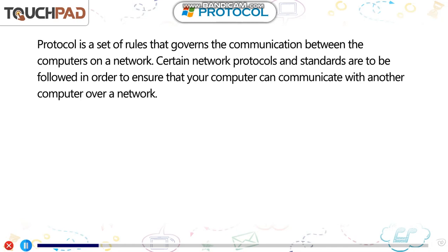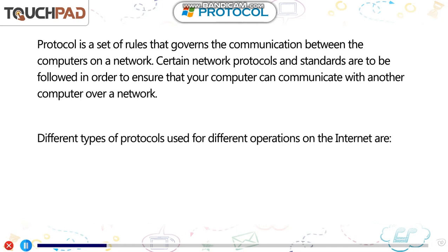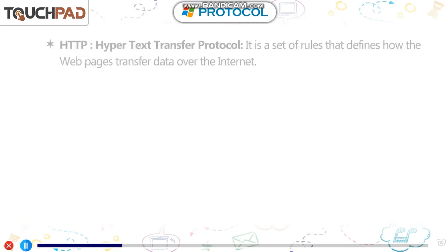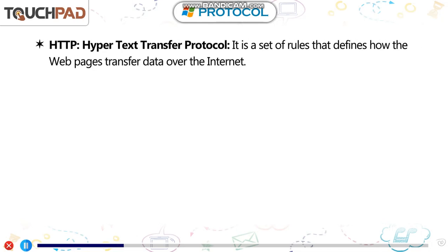Different types of protocols are used for different operations on the internet. HTTP – Hypertext Transfer Protocol – is a set of rules that defines how web pages transfer data over the internet.